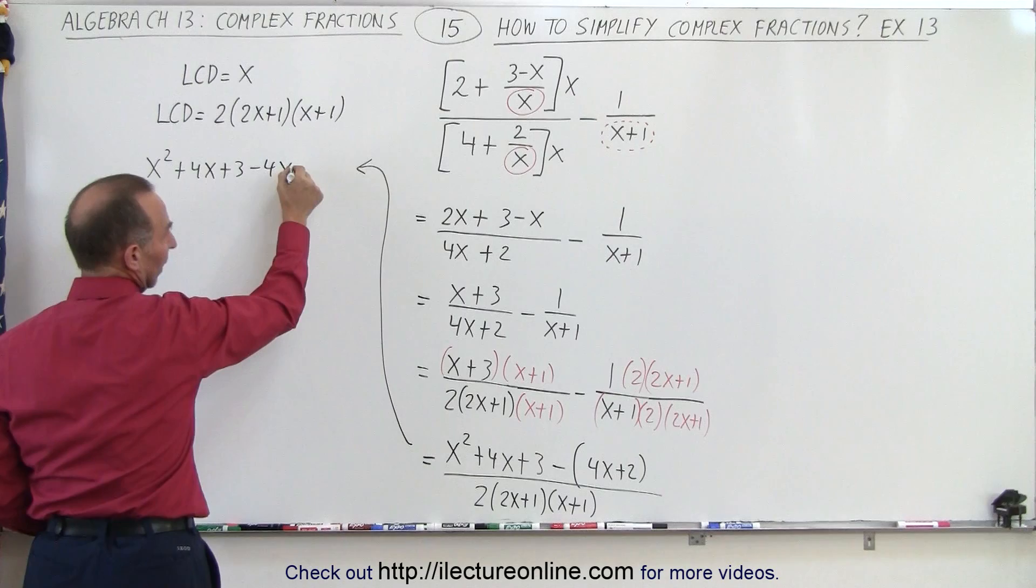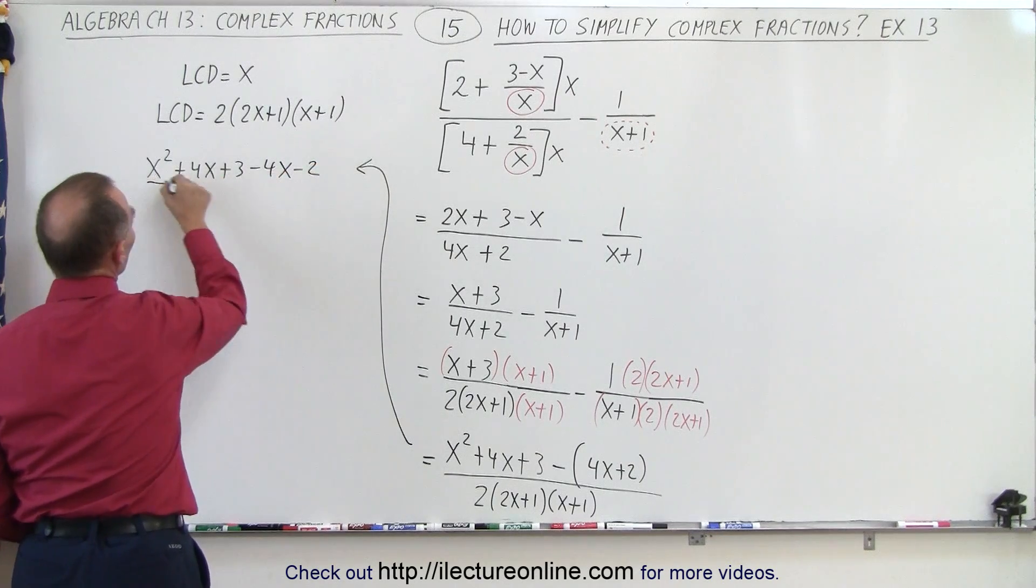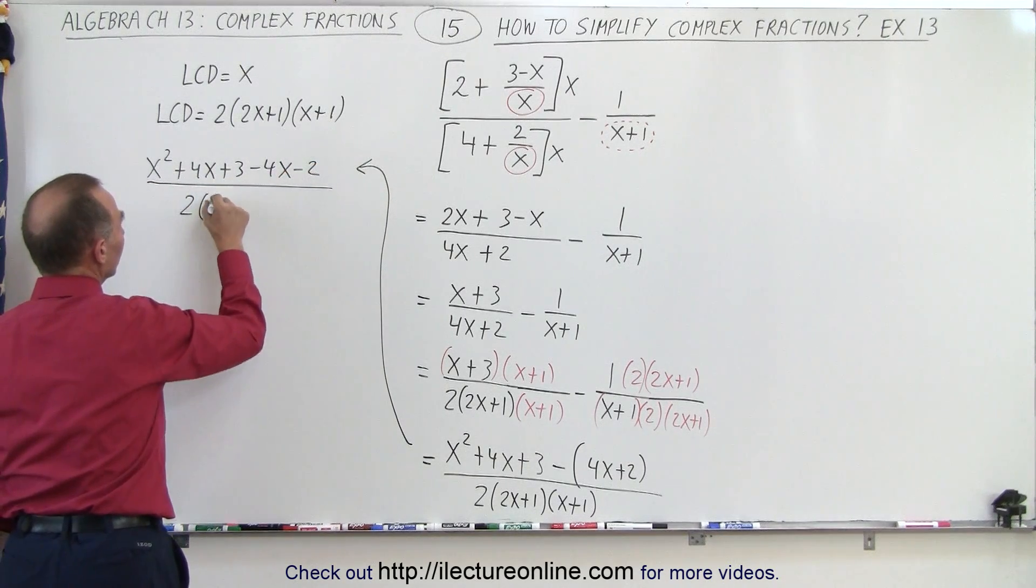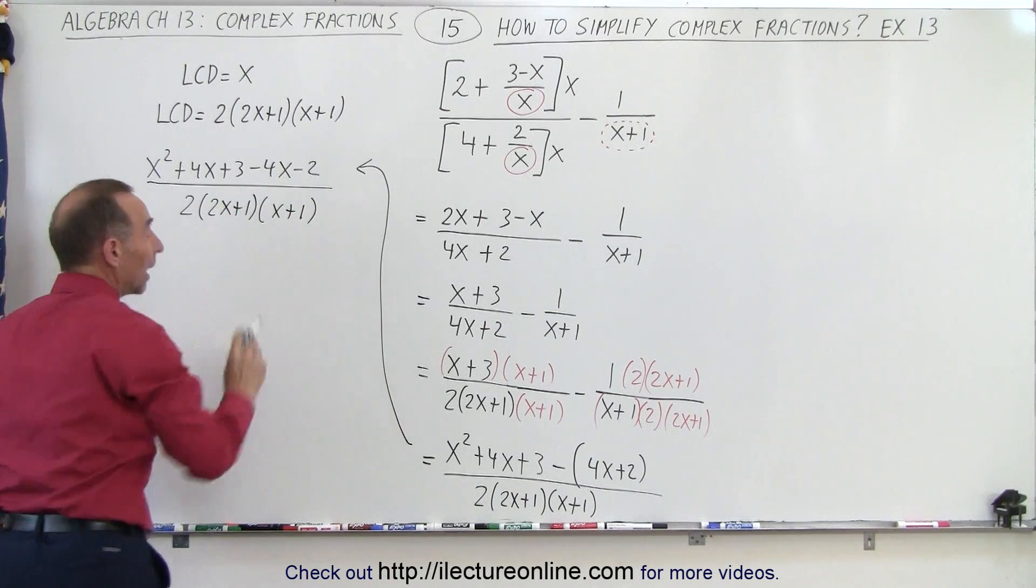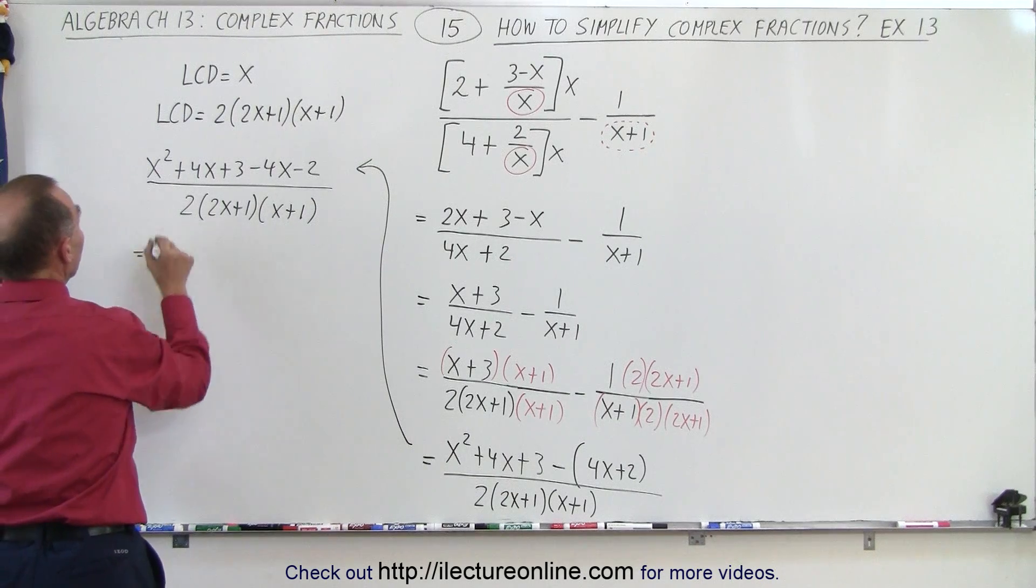All divided by 2 times 2x plus 1 times x plus 1. Now let's collect common terms in numerator and see what we get.